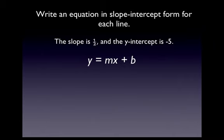Well, the slope is equal to m and the slope is 1 half, so we're going to replace the m with 1 half. And we're going to replace the b, which is the y-intercept, with negative 5. So our slope-intercept equation becomes y equals 1 half x minus 5.